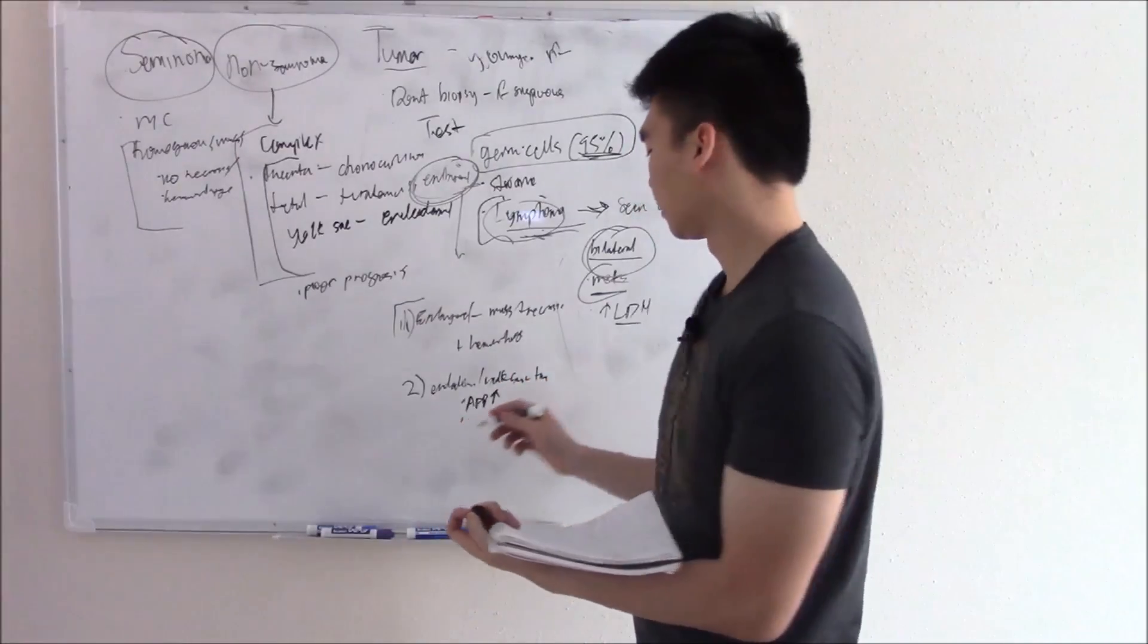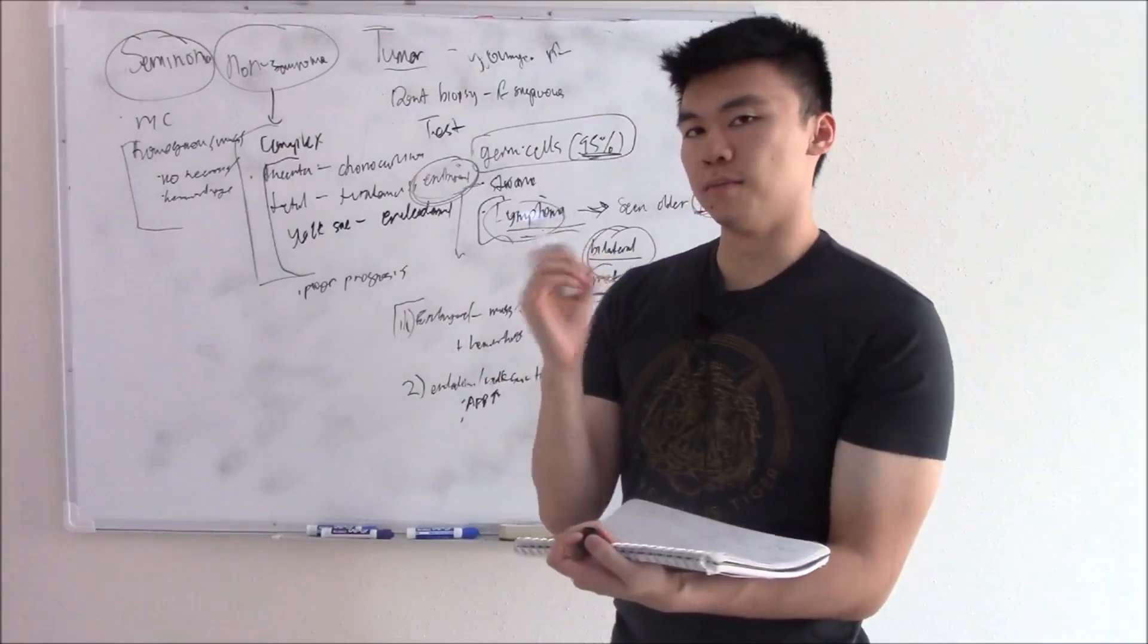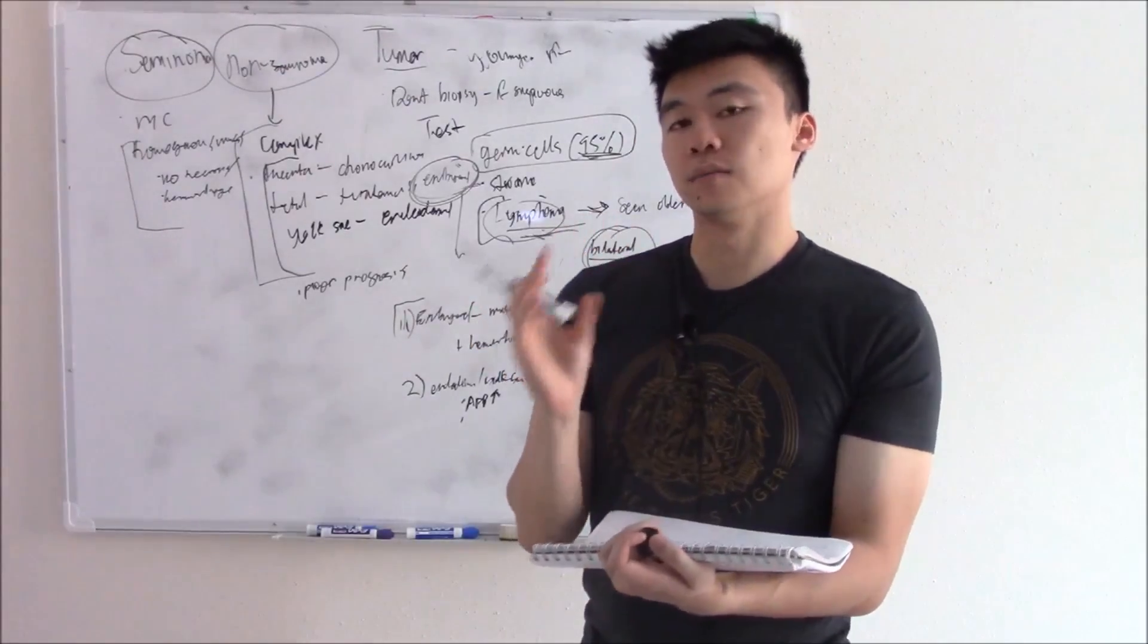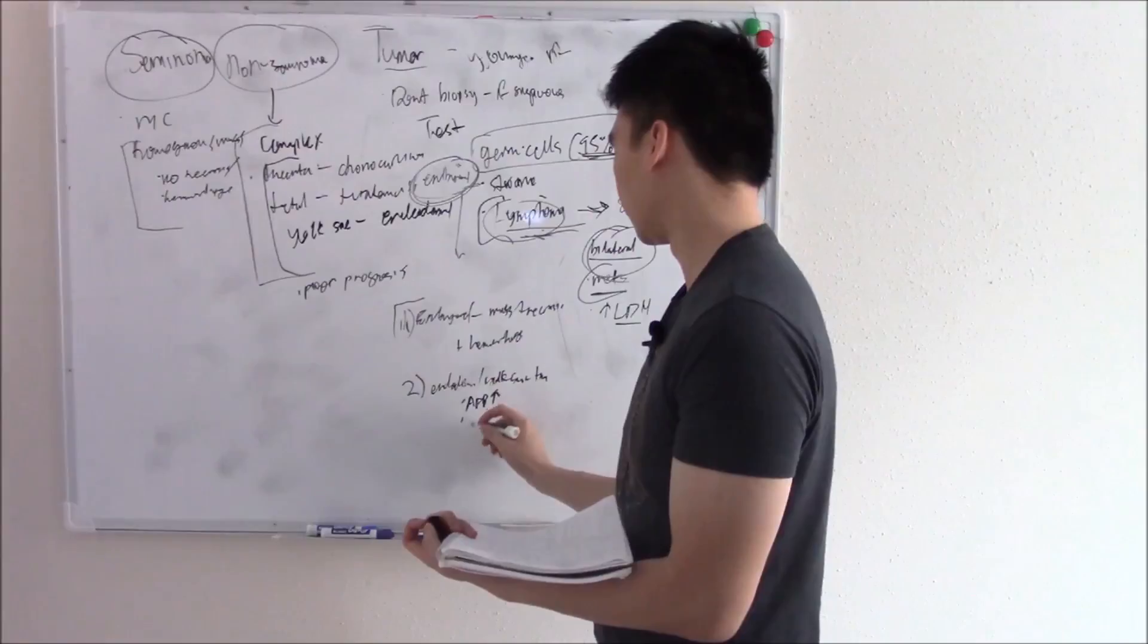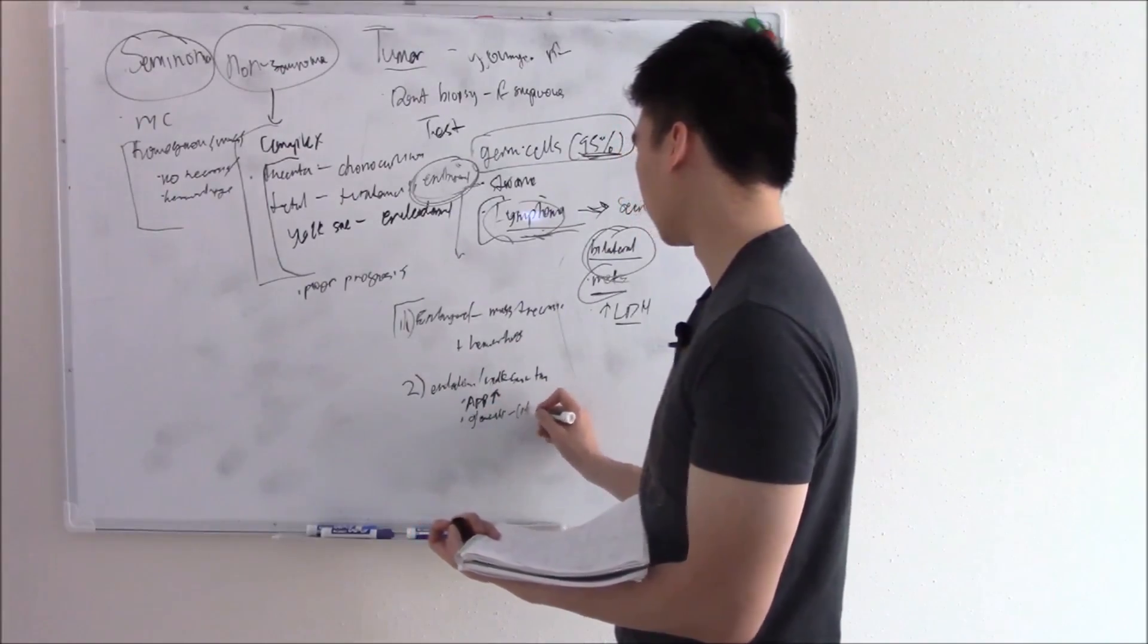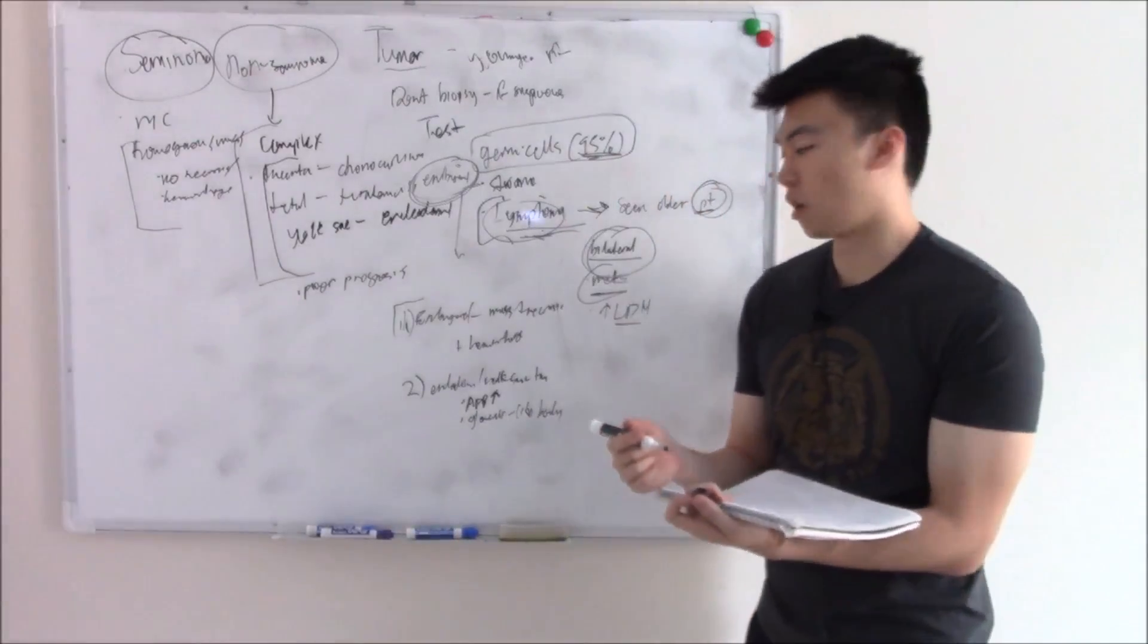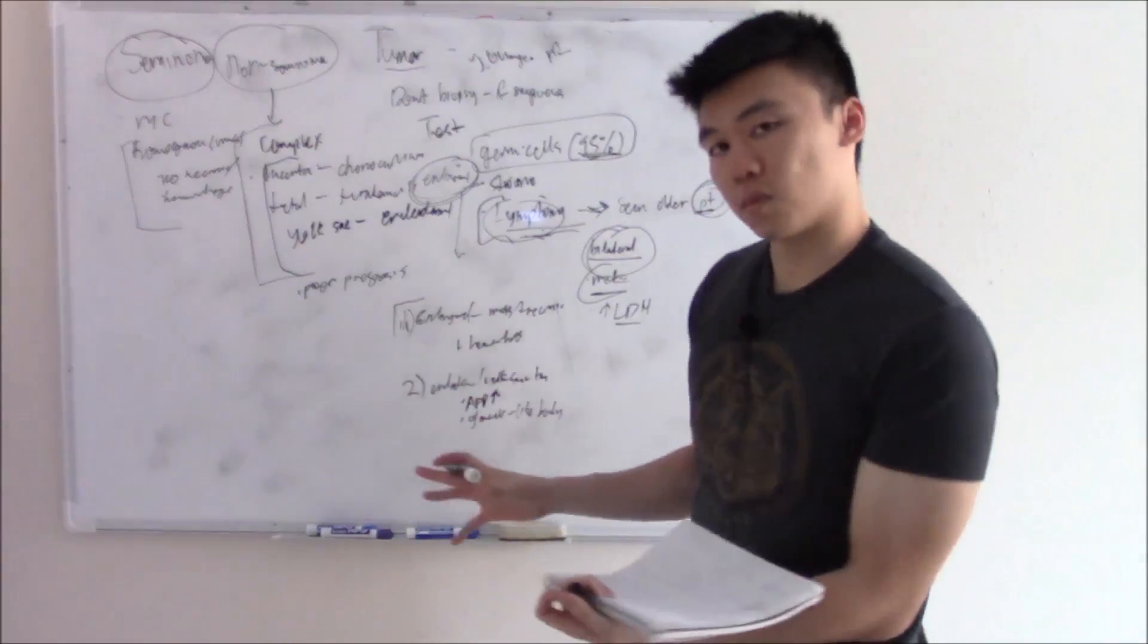Also, and if that's not enough, histologically you see these glomeruloid-like bodies. These bodies that look like glomeruli. Glomeruli-like bodies. The non-scientific name is Schiller-Duval bodies. And that is your endodermal tumors.